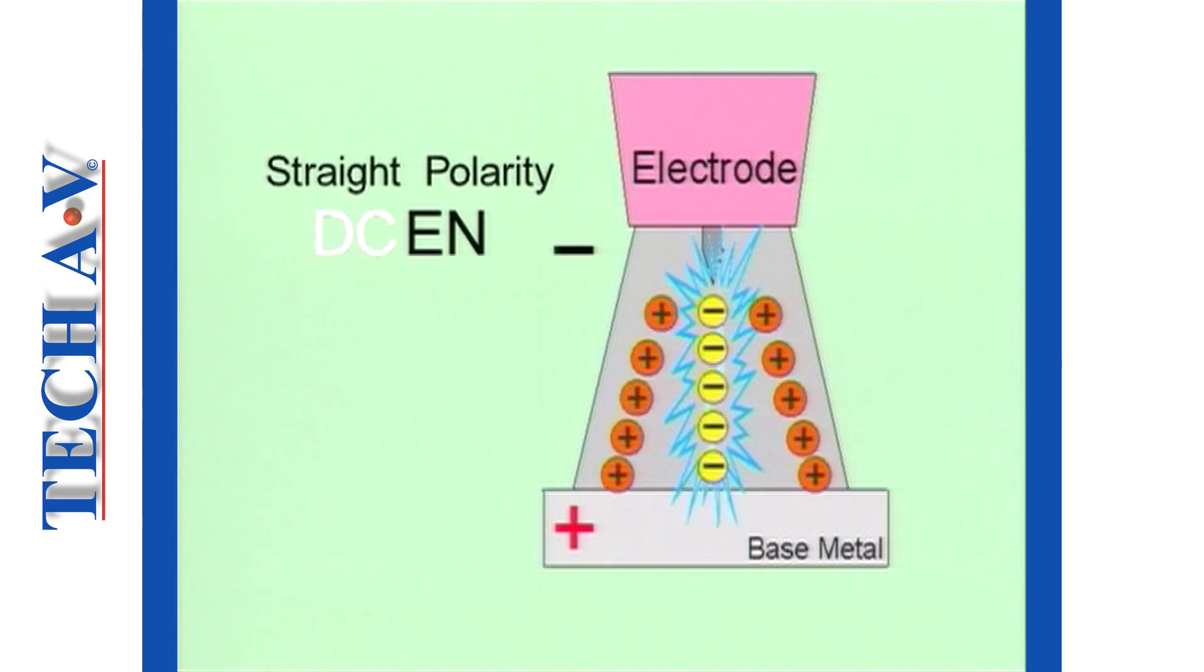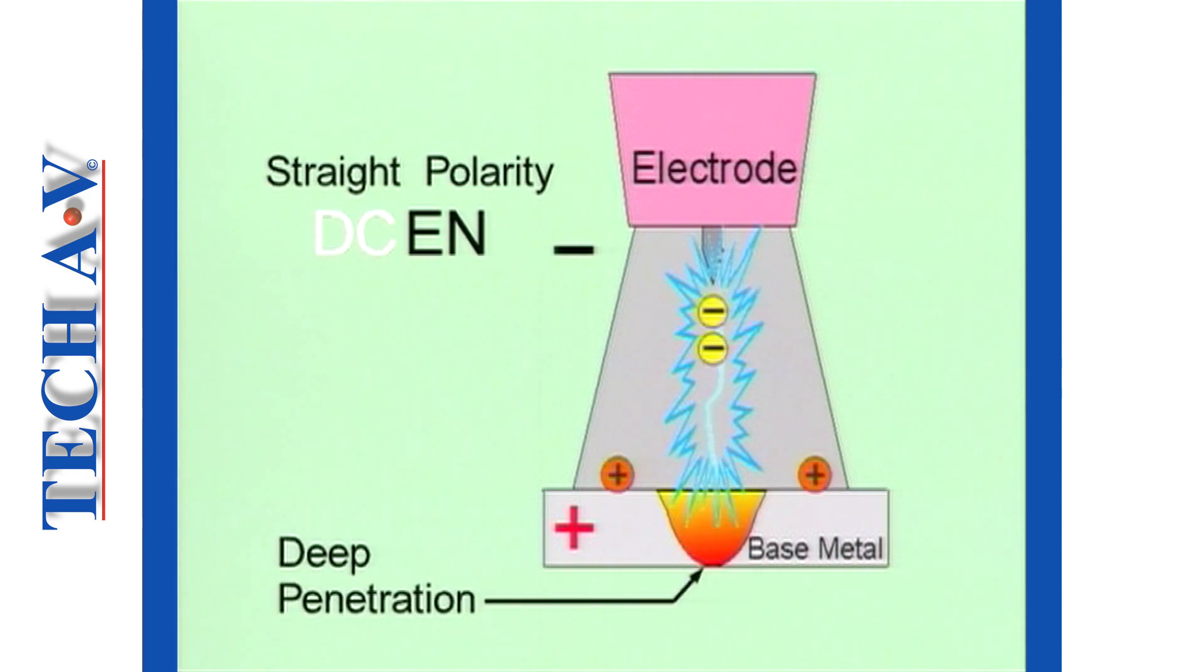Straight polarity results in a weld with deep penetration, because the majority of the arc heat is concentrated at the positive terminal of the arc, that is, the base metal. Straight polarity is the most usual polarity for TIG welding with DC current.